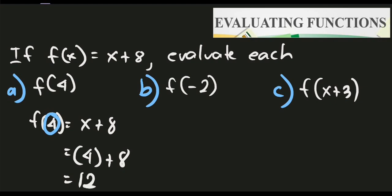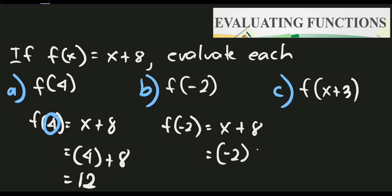Just substitute the given value of x or the input. Next, if we have f of negative 2, what will be the value of our function? If negative 2 is our input, we have f of negative 2 equals x plus 8. Substitute: change x to negative 2 and simplify. So it gives us negative 2 plus 8, which equals positive 6.